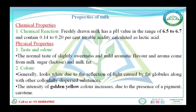Now the physical properties of milk: the pH of freshly drawn milk is near 6.5 to 6.7 — slightly acidic. Milk has a slightly sweet taste and a good aroma due to the presence of lactose and milk fat. Milk generally looks white in color due to reflection of light caused by fat globules and other colloidal substances. The intensity of golden yellow color increases due to the presence of the pigment carotene. Questions from this portion are frequently asked in examinations.